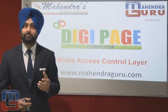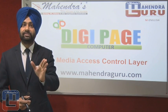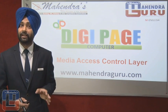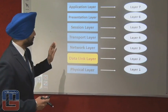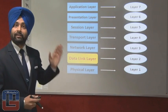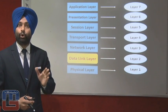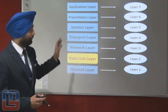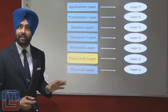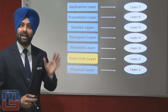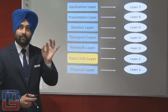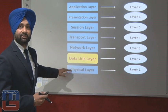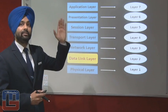Answer a question: Data Link Layer is the second layer of the OSI model. Here we have a seven-layer architecture, a framework known as OSI. We follow the bottom-top approach — first, second, third, and so on.